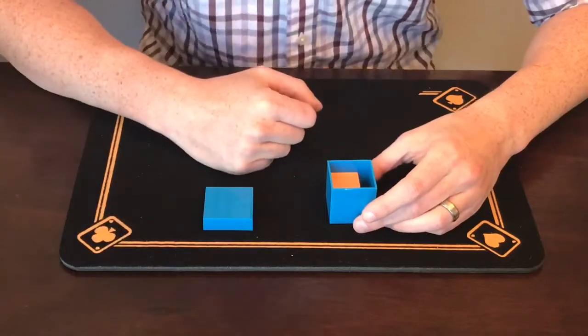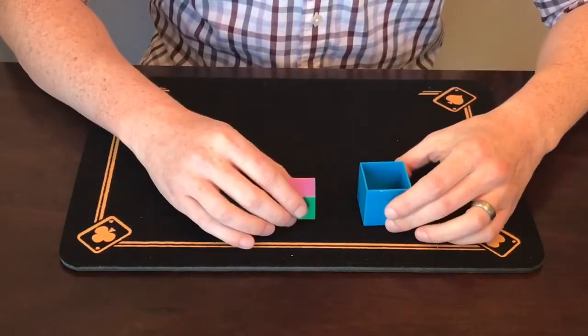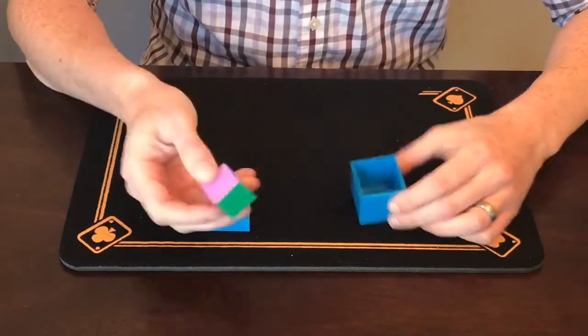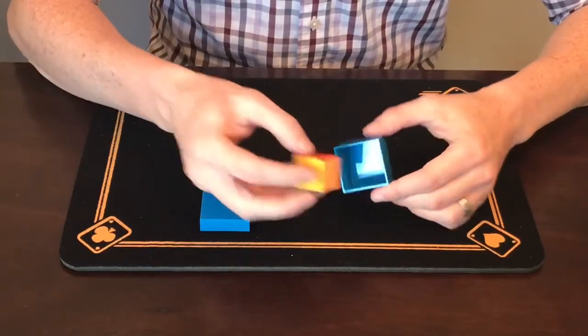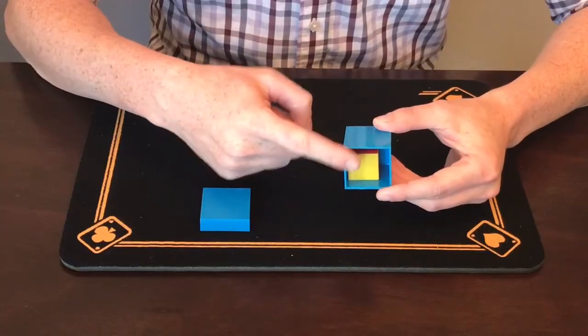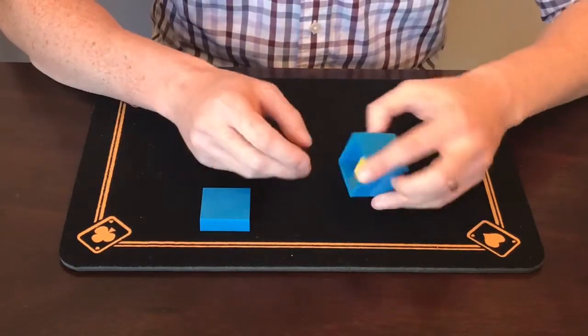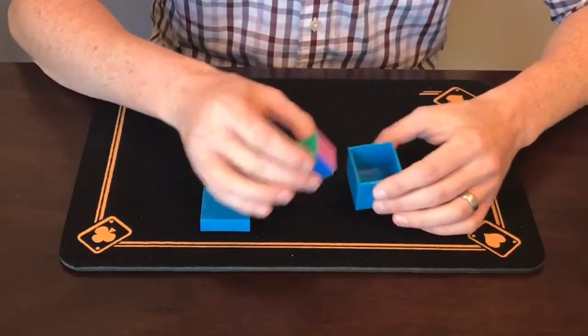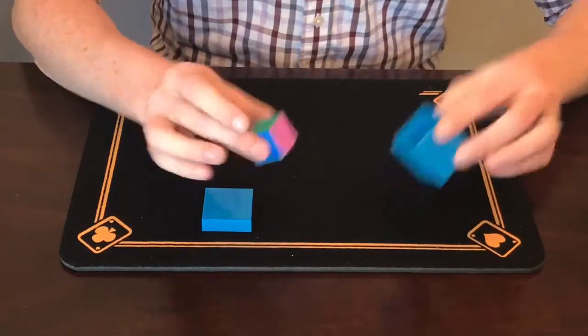So once that's been confirmed by somebody, I would turn around, turn my back, and I would have somebody put the cube inside the box and remember what color is showing, what color is on the top there. So to make sure I can't see what color I'm putting on top, I'm going to do it under the table.